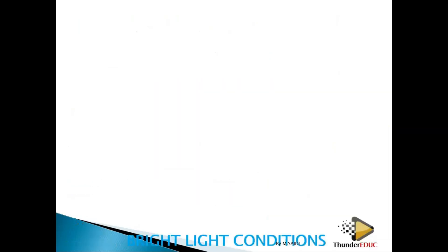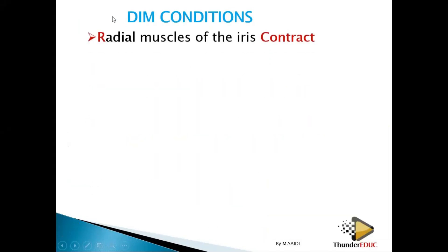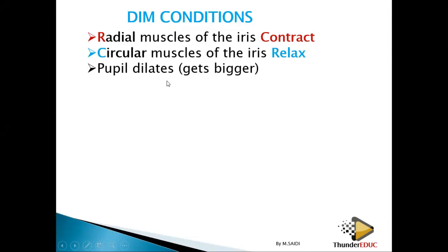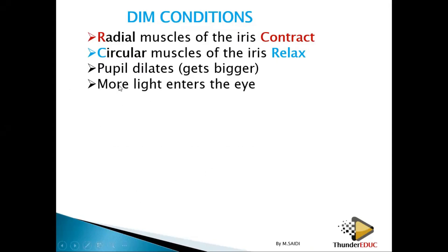What about dim light? In dim light or dim conditions, the radial muscles contract and then the circular muscles relax — it's just the opposite. So the pupil dilates. When we talk about dilation, it means the pupil becomes bigger, increases in size, becomes wider, and then more light enters the eye.